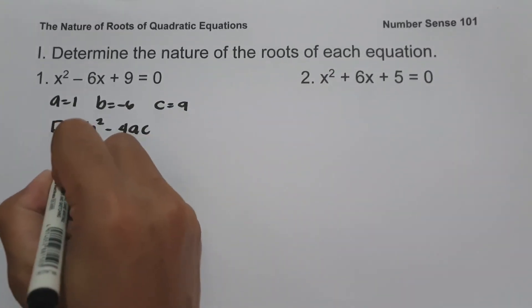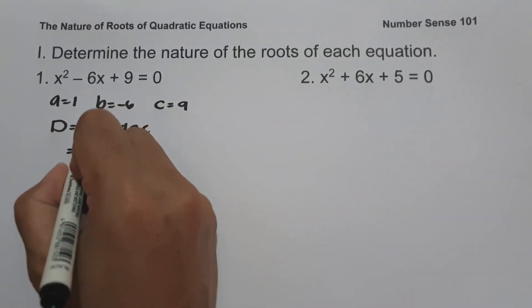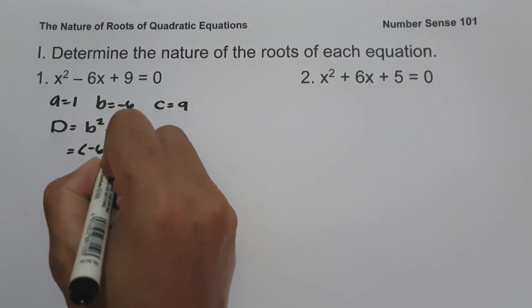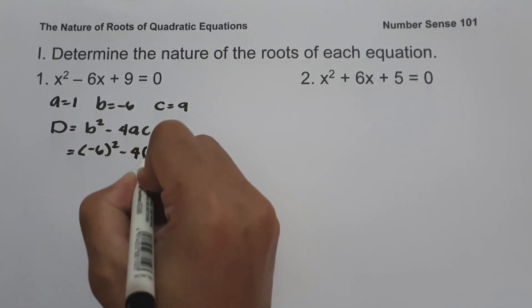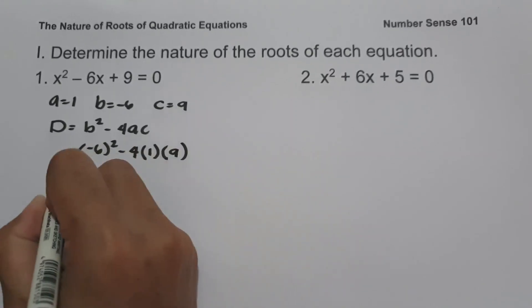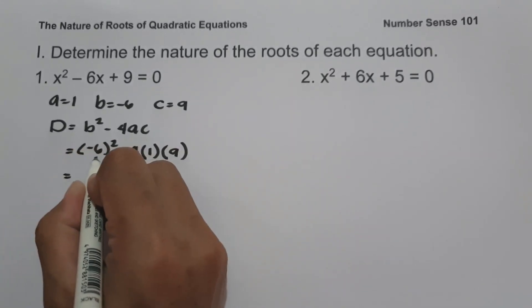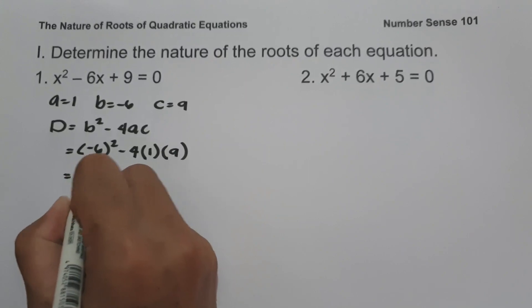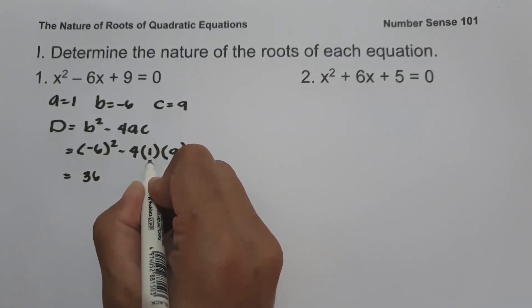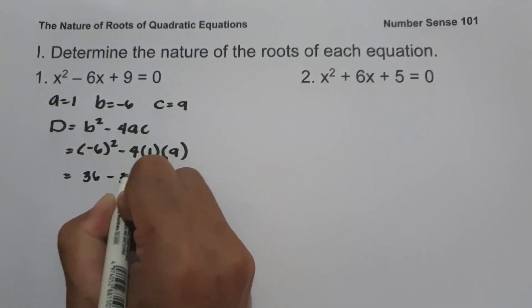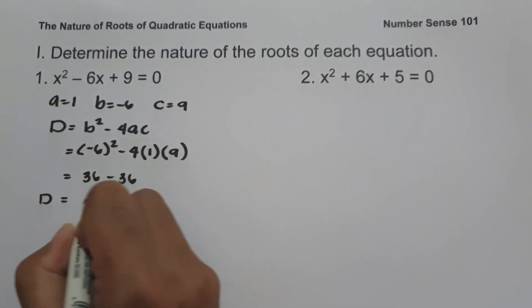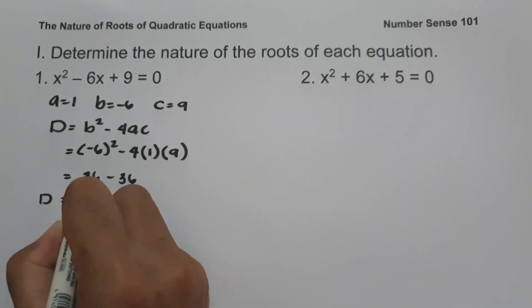So let us substitute the values of a, b, and c. The value of b is negative 6, so we are going to have negative 6 squared minus 4 times a, that is 1, and c is 9. Negative 6 squared is 36. Negative 4 times 1 is negative 4, and negative 4 times 9 is negative 36. So the value of the discriminant is 36 minus 36, which is 0.